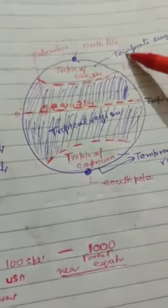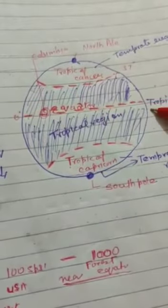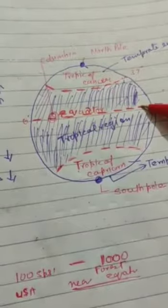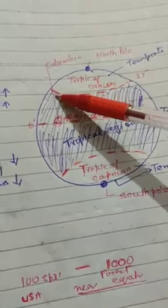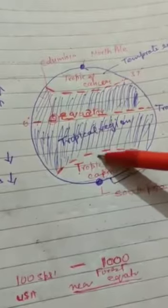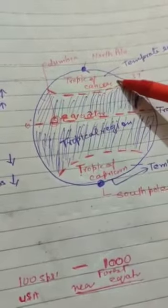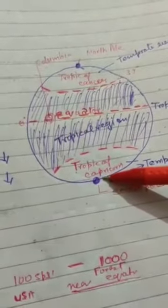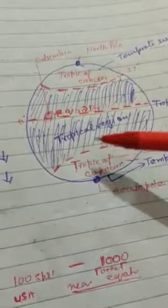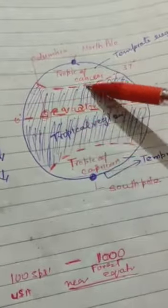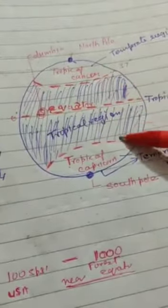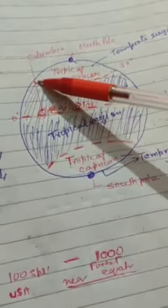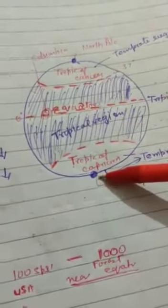I have drawn the diagram of the earth here, and this central dividing line is known as the equator. These two lines are the Tropic of Capricorn and the Tropic of Cancer, and these are the north pole and south pole. Near the equator — the portion shaded in blue — maximum biodiversity is found, whereas at the north pole and south pole, biodiversity is minimum.